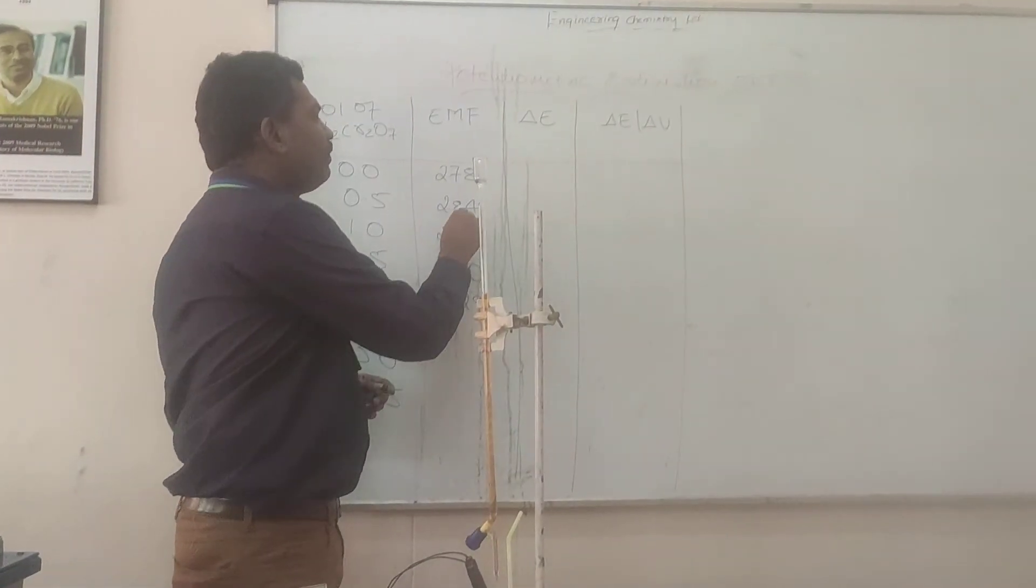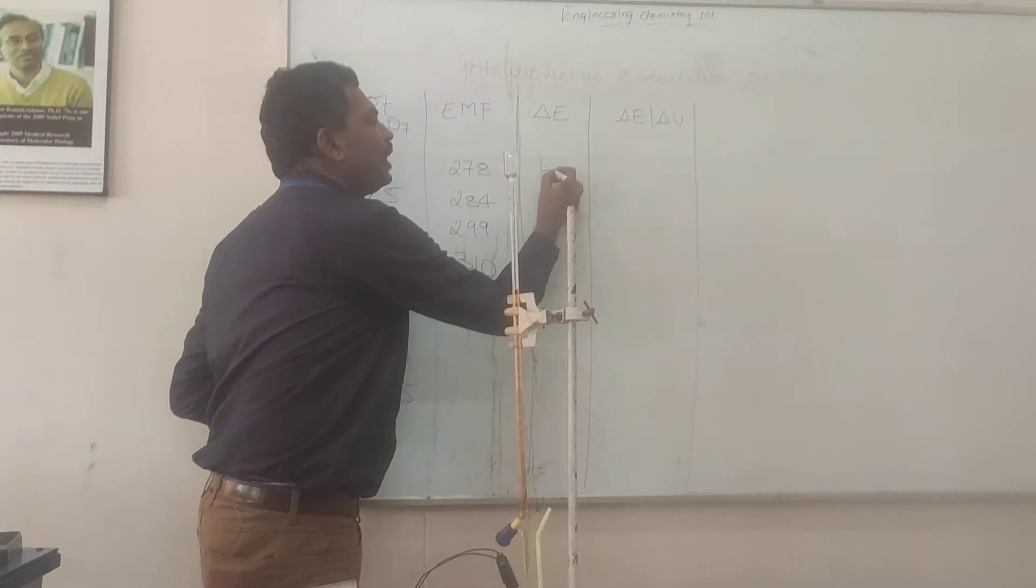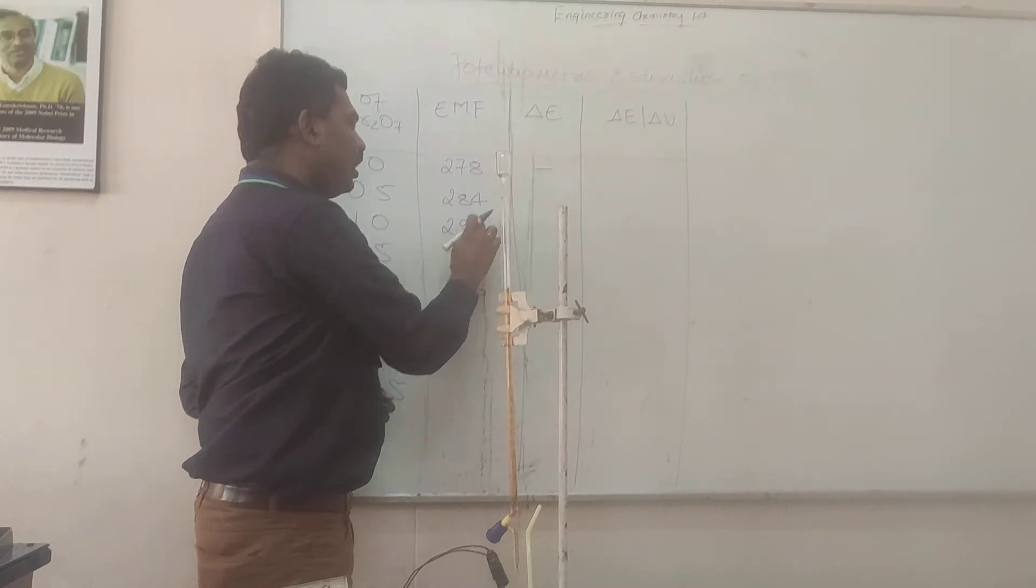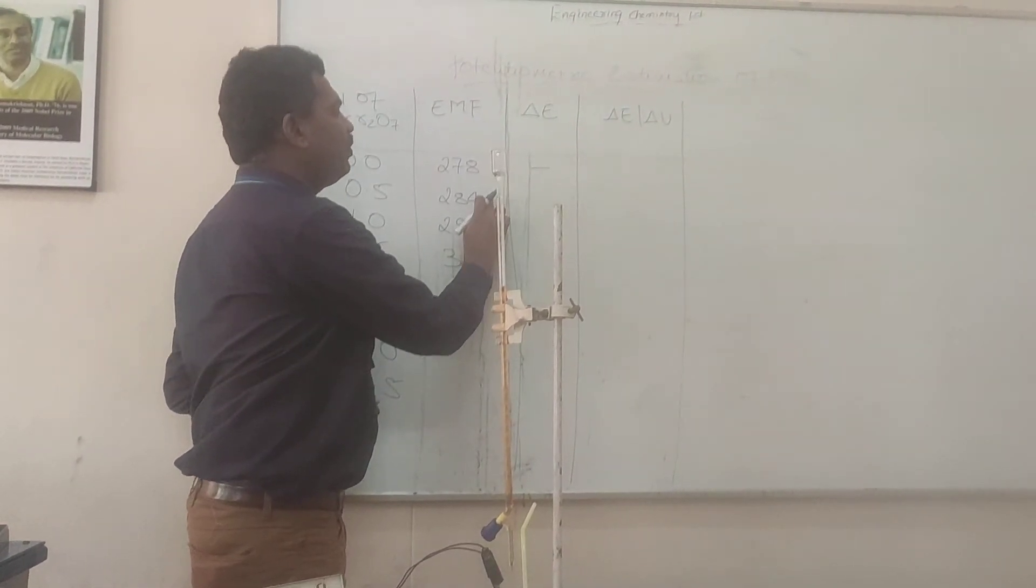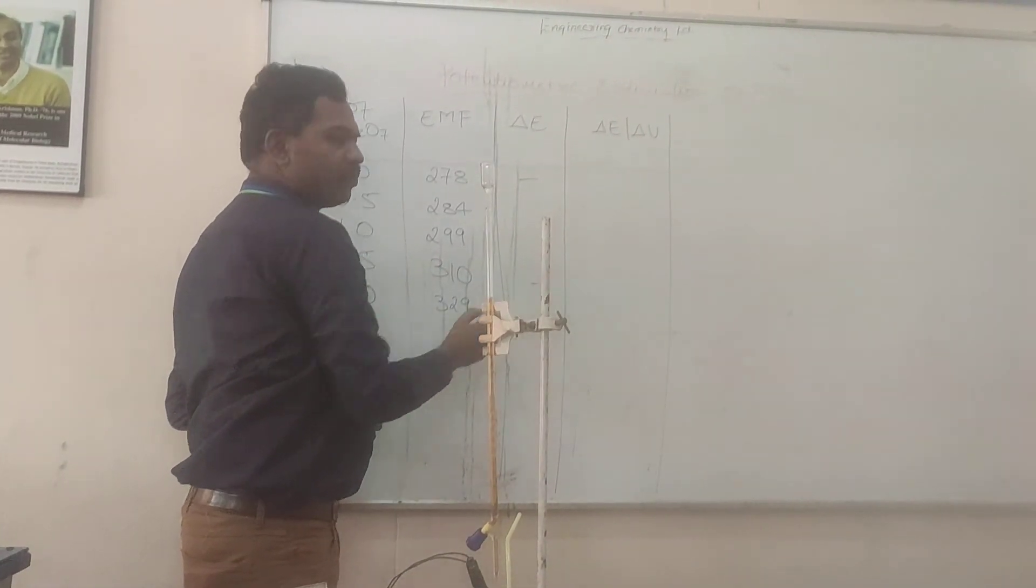Calculate delta E. What is delta E? Difference between this EMF and this EMF. For this, there is no delta E value. 284 minus 278 is delta E. 299 minus 284 is for this value. The next value minus 299 comes over here.